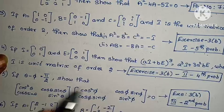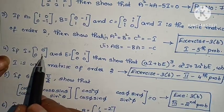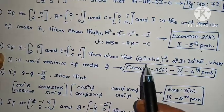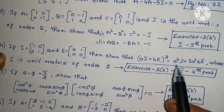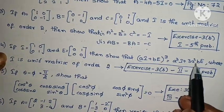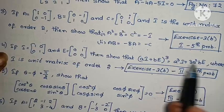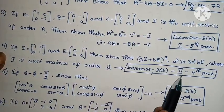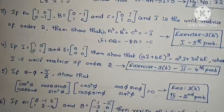Fourth one: if I equals to [1, 0; 0, 1], and E equals to [0, 1; 0, 0], then show that (aI + bE)³ = a³I + 3a²bE, where I is the unit matrix of order 2. Exercise 3(b), second roman, fourth problem.